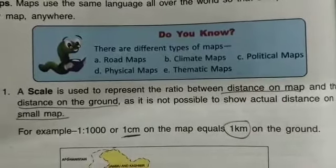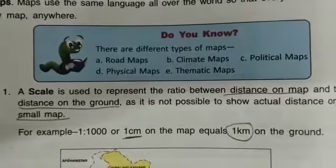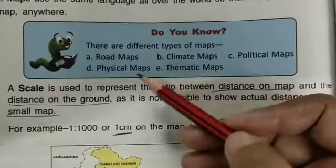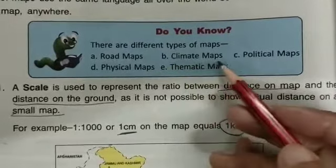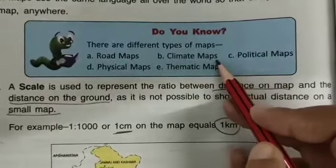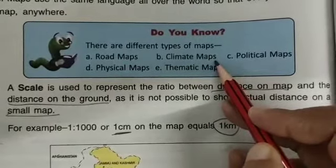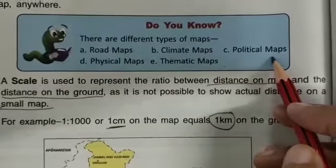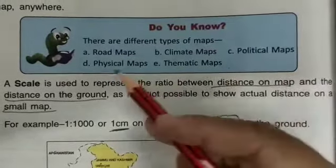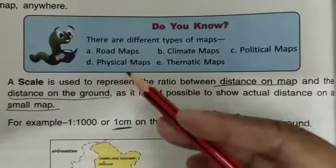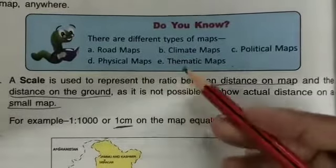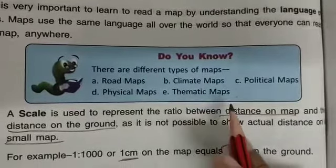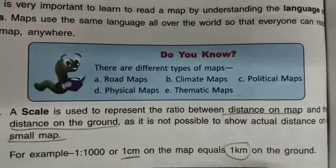There are different types of maps. There is the road map, the climate map which tells about climate, the political map which tells about countries, states, cities and towns, the physical map which tells about rivers and mountains, and the thematic map.